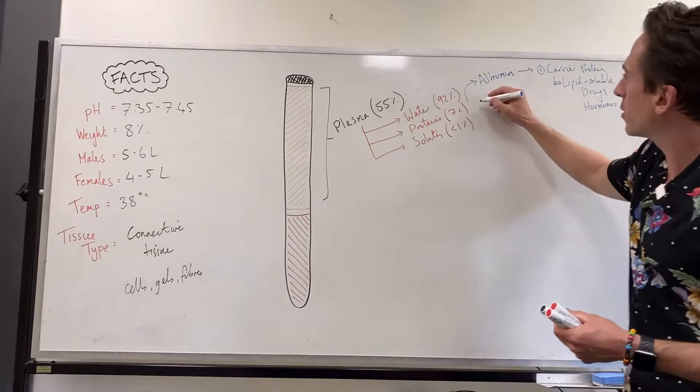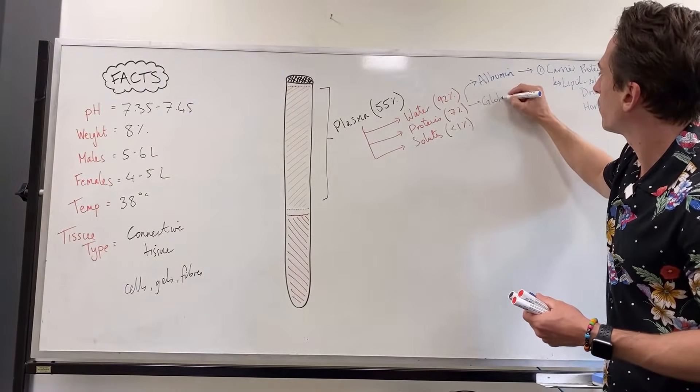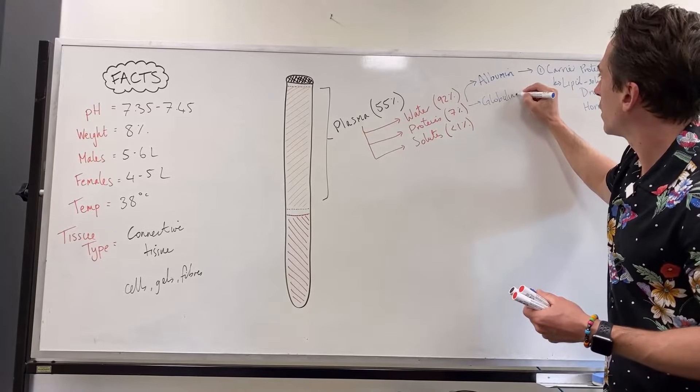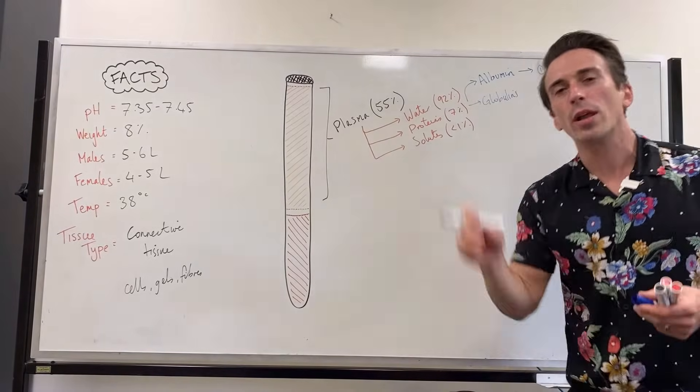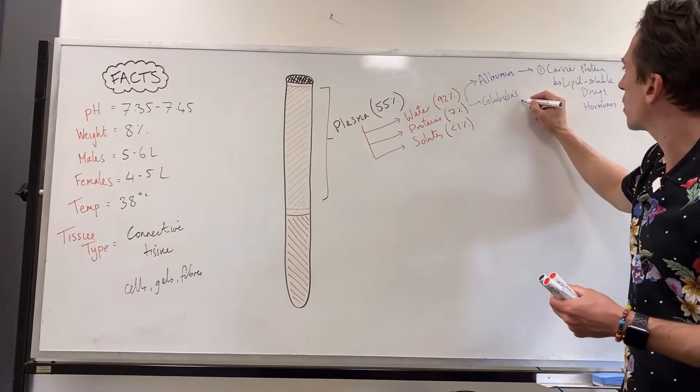The second type of protein you should know are the globulins. And the globulins play a big role in immune function and clotting.